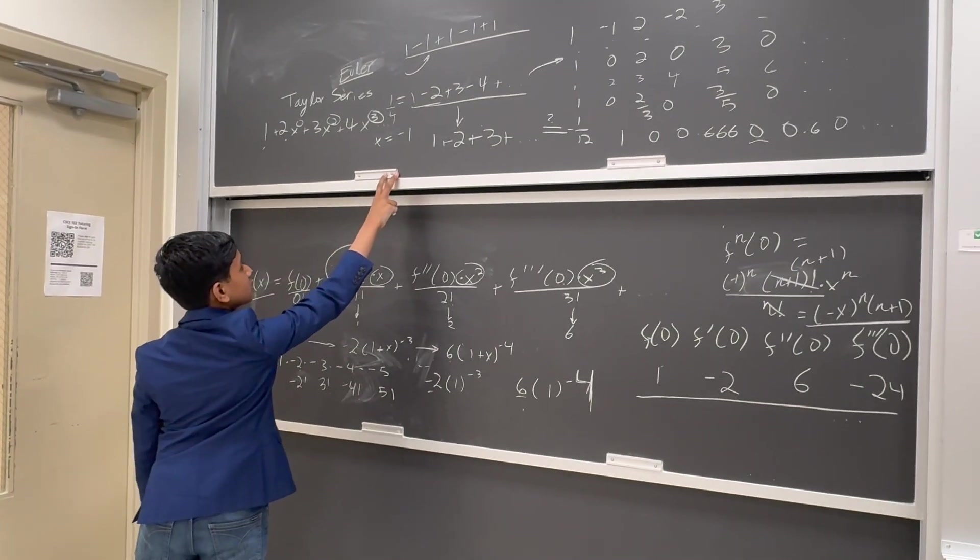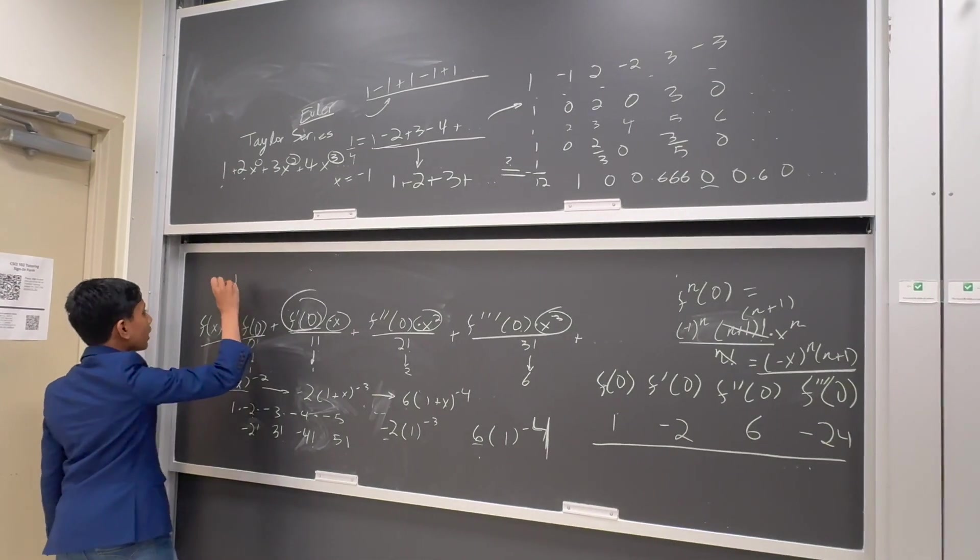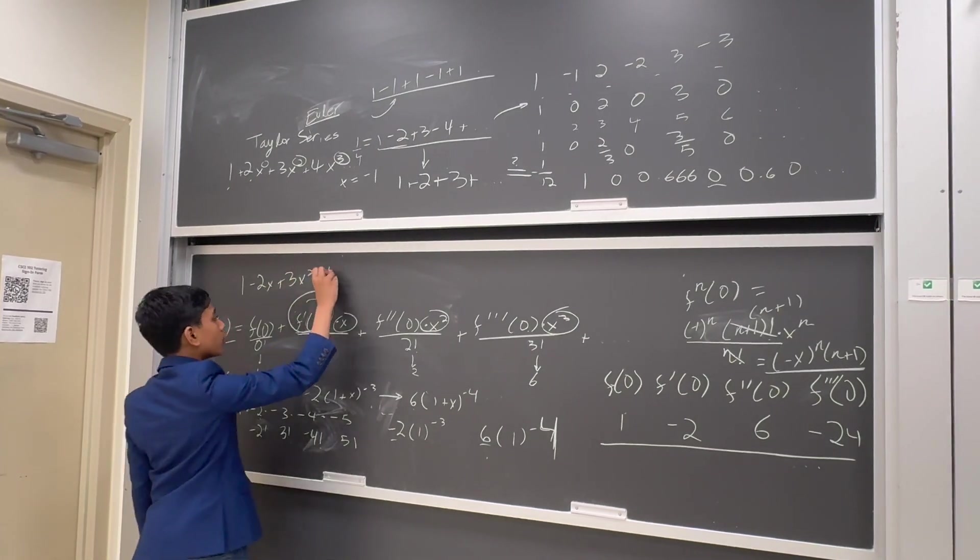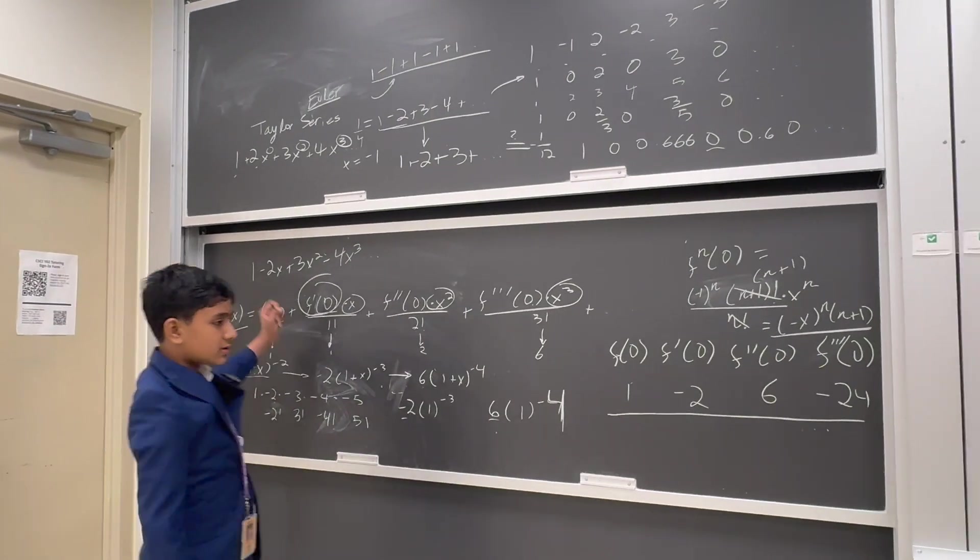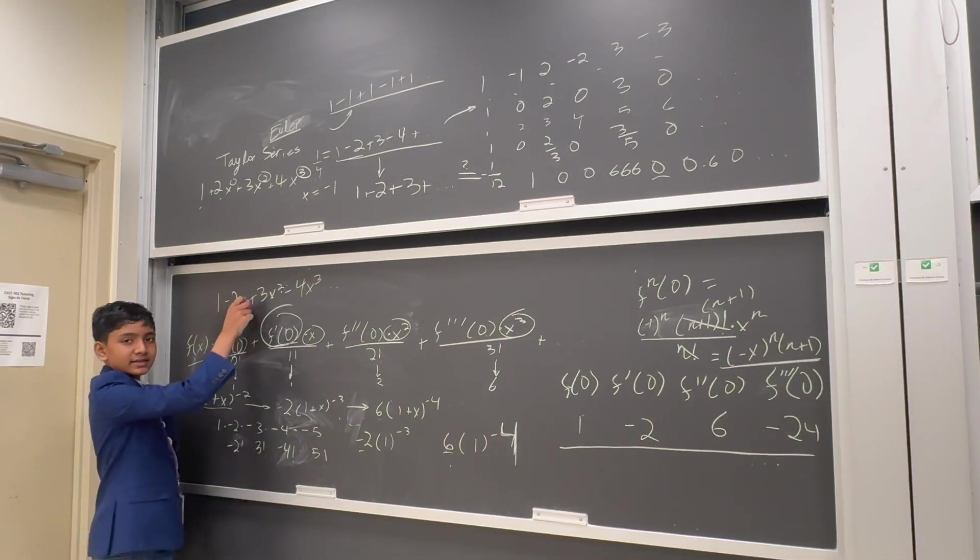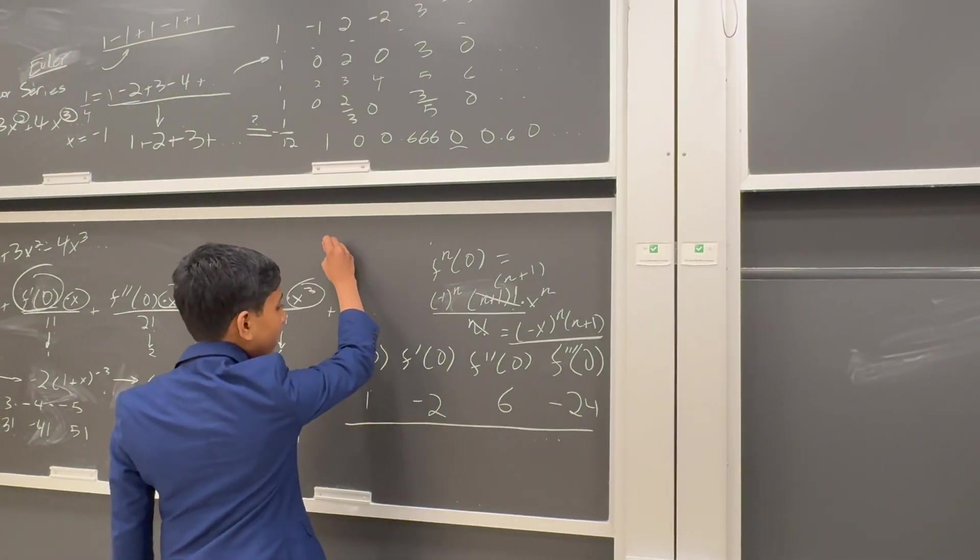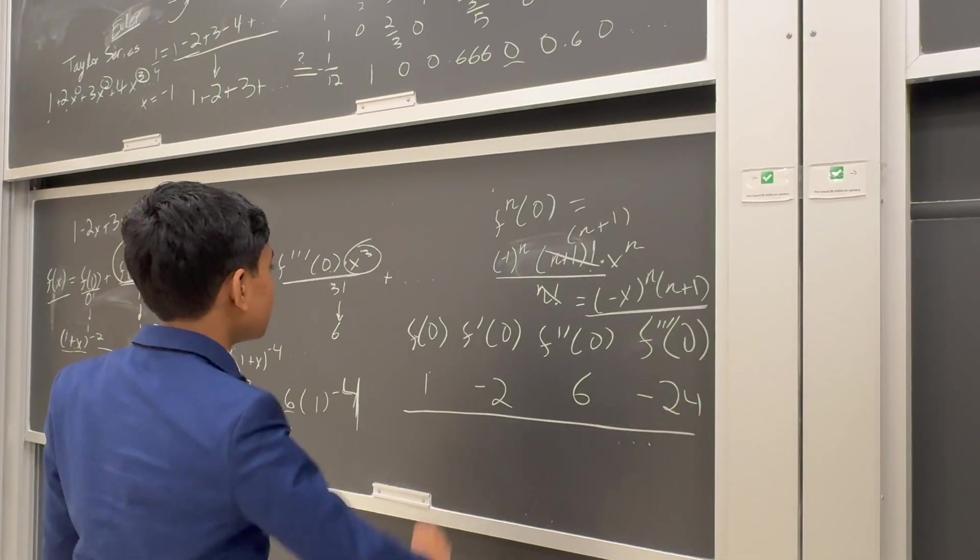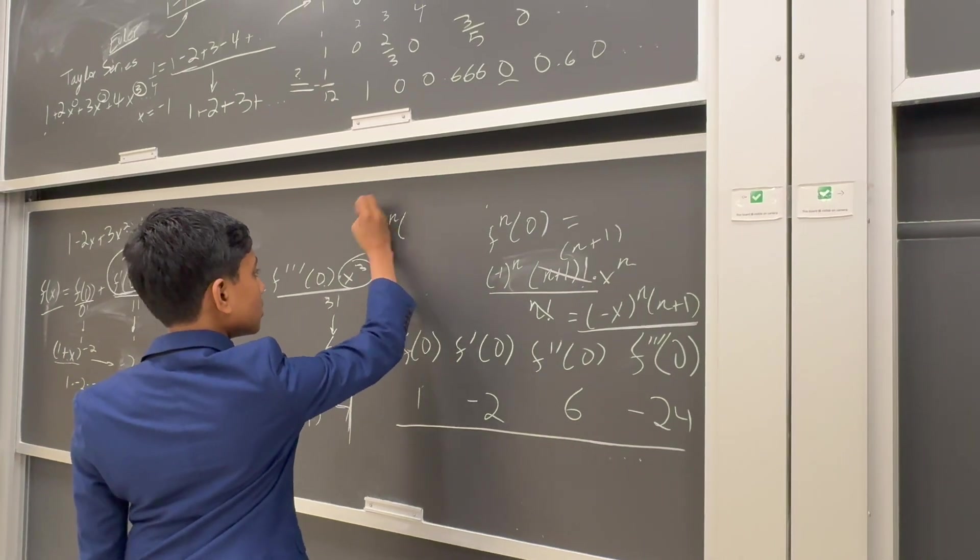Oh, I never actually wrote the series down. So let's put it over here: 1 minus 2x plus 3x squared minus 4x cubed, etc. So this looks a little familiar, doesn't it? Especially with the exponent being 1 less than the actual thing. So then, all we need to do to satisfy this is just plug in.